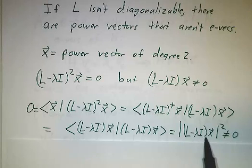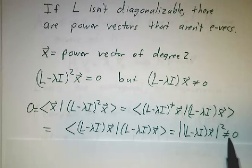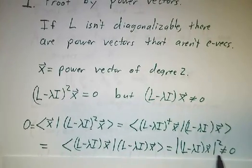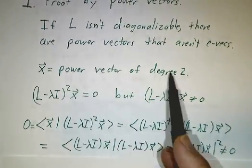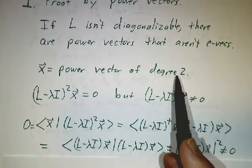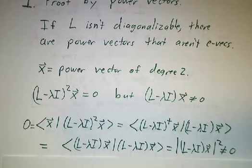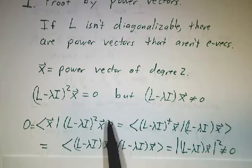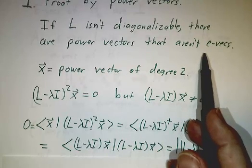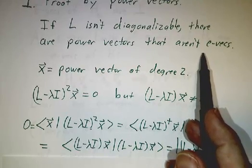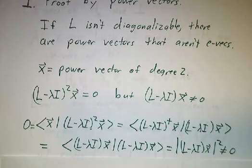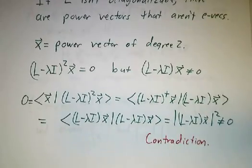That's the length of (L minus λI)x squared, and that's not 0. So we just showed that 0 equals a number that's not 0 — something must have gone wrong. What went wrong was the assumption that there was a power vector of degree 2. If there are no power vectors of degree 2, there are no power vectors of degree bigger than 2. So all power vectors are actually eigenvectors. Since there's always a basis of power vectors, there's a basis of eigenvectors, and so our matrix was diagonalizable.